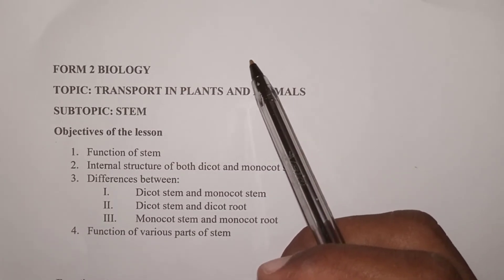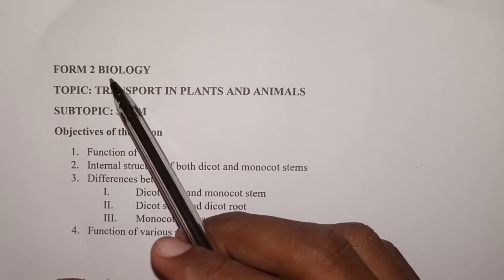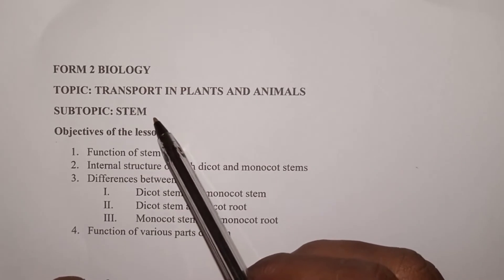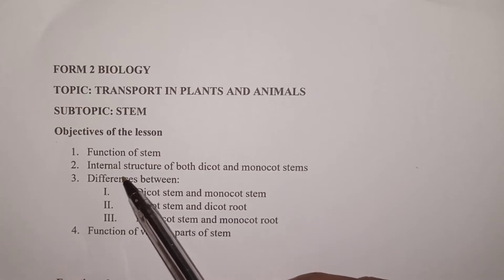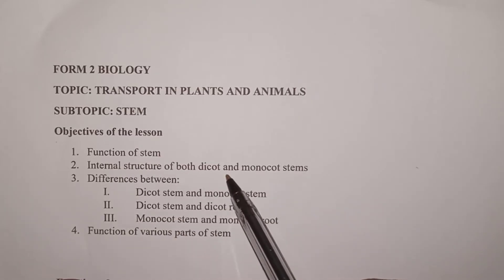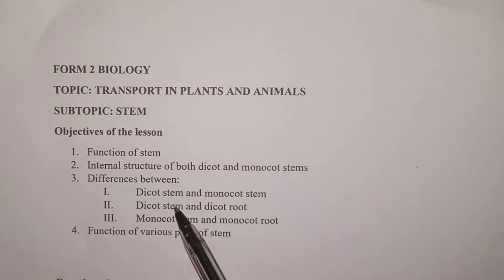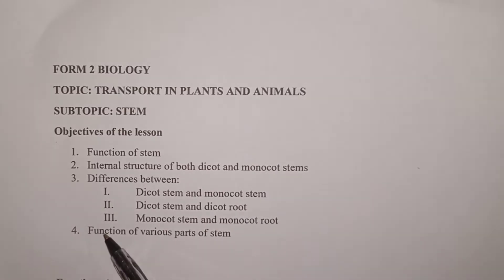Welcome to our channel. In this lesson, we discuss biology Form 2, topic: Transport in Plants and Animals, subtopic: Stem. Objectives of the lesson — number one: know the function of the stem; number two: internal structure of both dicot and monocot stems; number three: differences between a dicot stem and monocot stem, dicot stem and dicot root, monocot stem and monocot root.